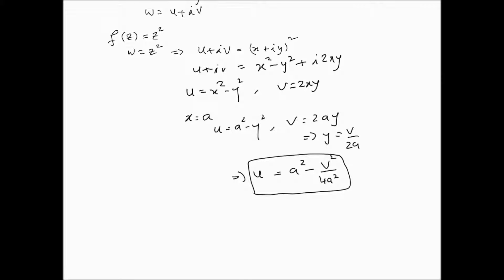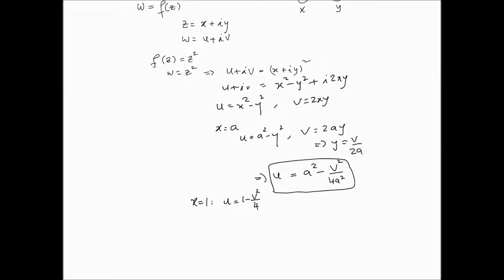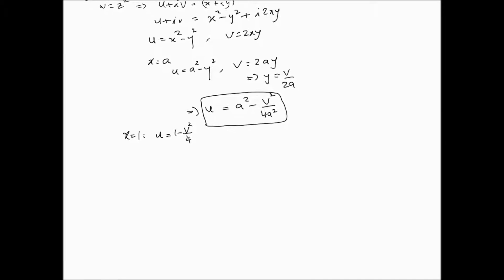But this is an important relationship. Using this relationship, now you can set x equal to 1, for instance. When x equals 1, we have u equals 1 minus v squared over 4. The plotting, I mean, this particular function isn't very easy to deal with, but it can be plotted as follows.